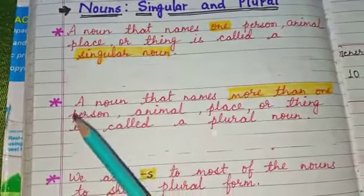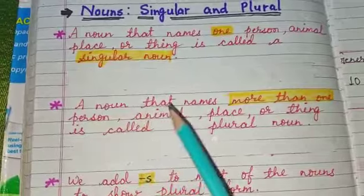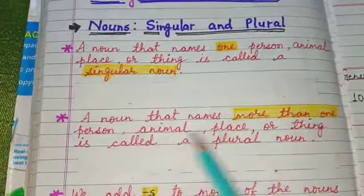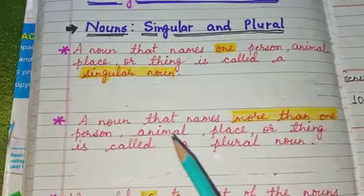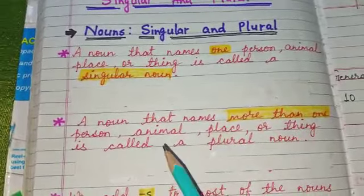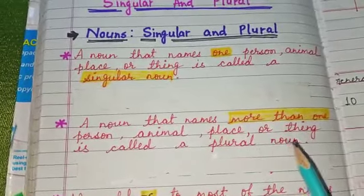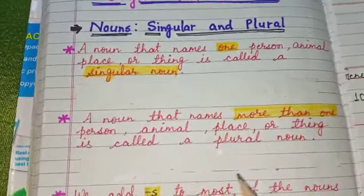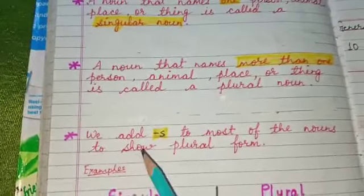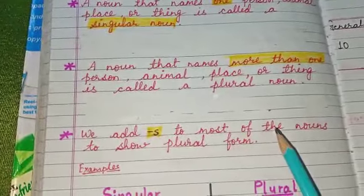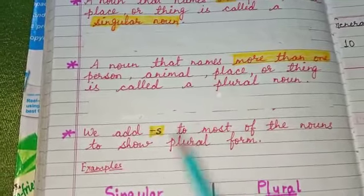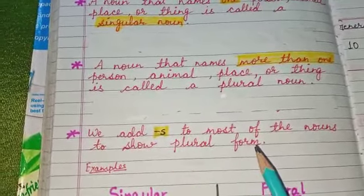Next: a noun that names more than one person, animal, place or thing is called a plural noun. We add 's' to most of the nouns to show plural form.